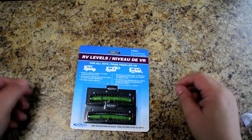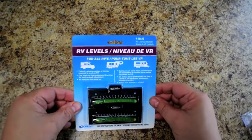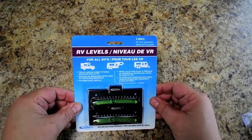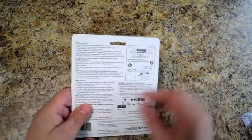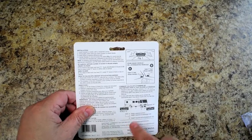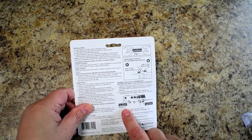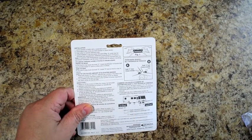Well, this is my review of the Hopkins RV Level, part number 08525. If you look at it on the back, the way this is supposed to work is that there's two scales, a C scale and a 3 scale.